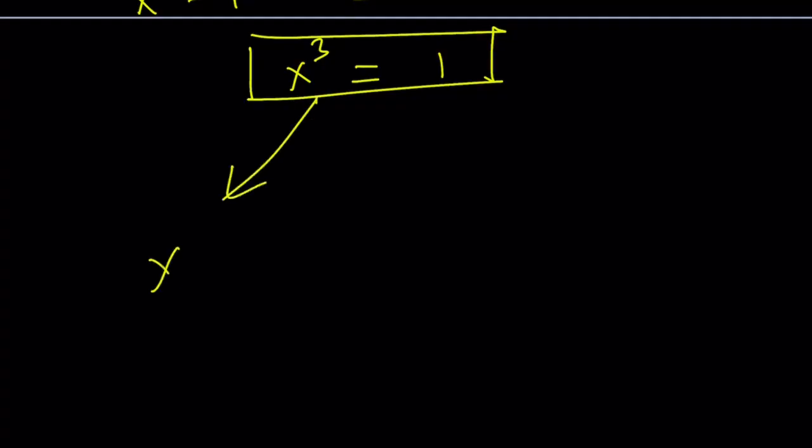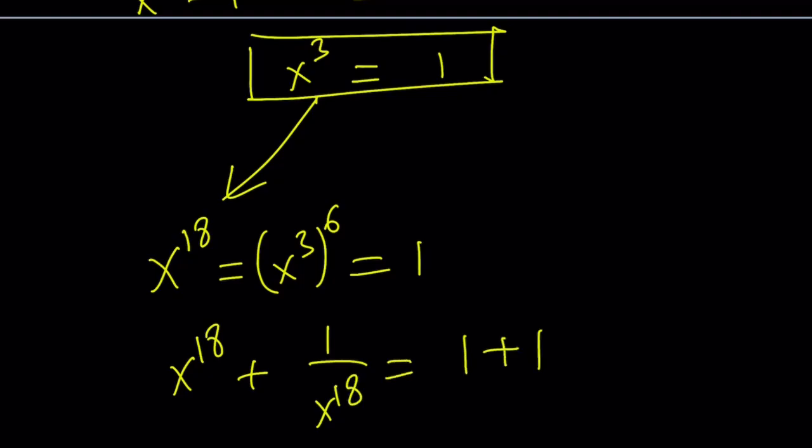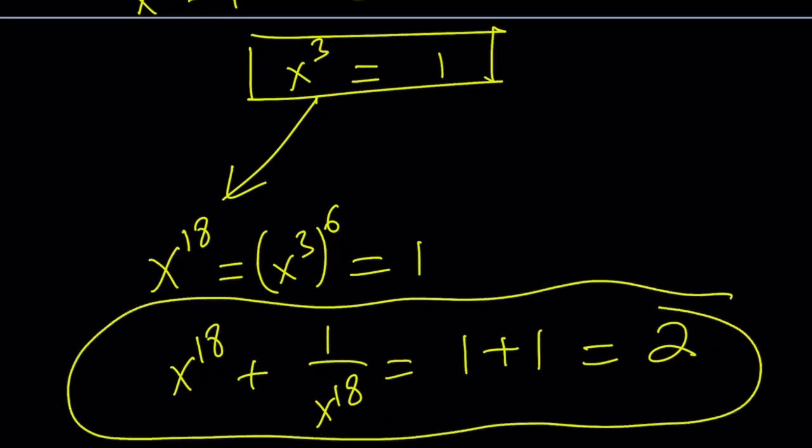And from here, I need x to the power 18, which is x to the power 3 to the power 6, which is 1. So x to the power 18 plus 1 over x to the power 18 is 1 plus 1, just like the complex version, and that is equal to 2. And this brings us to the end of this video. Thank you for watching.